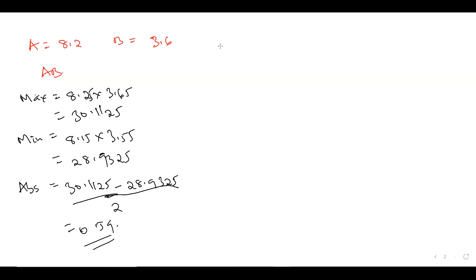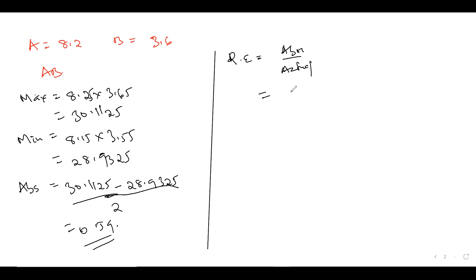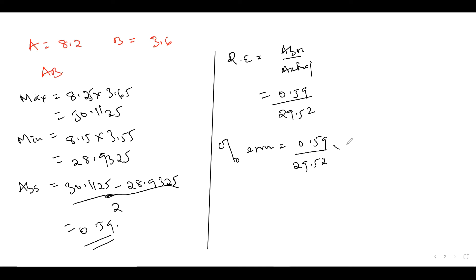For the same question, if they ask to calculate the relative error of A times B: relative error is absolute over actual. In this case, the absolute is 0.59, divided by the actual value — 8.2 times 3.6 = 29.52. So that would be the relative error. If they ask for the percentage error, it's absolute over actual (29.52) times 100, which gives roughly 1.999%. So that operation was basically multiplication.